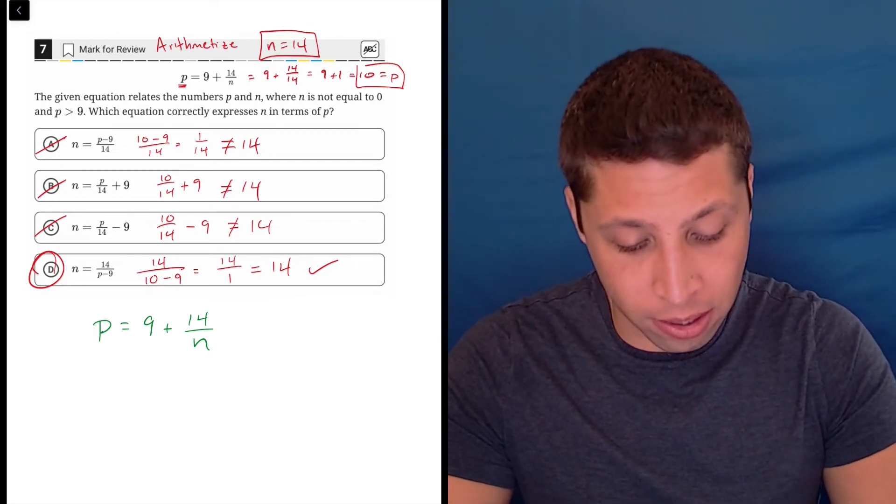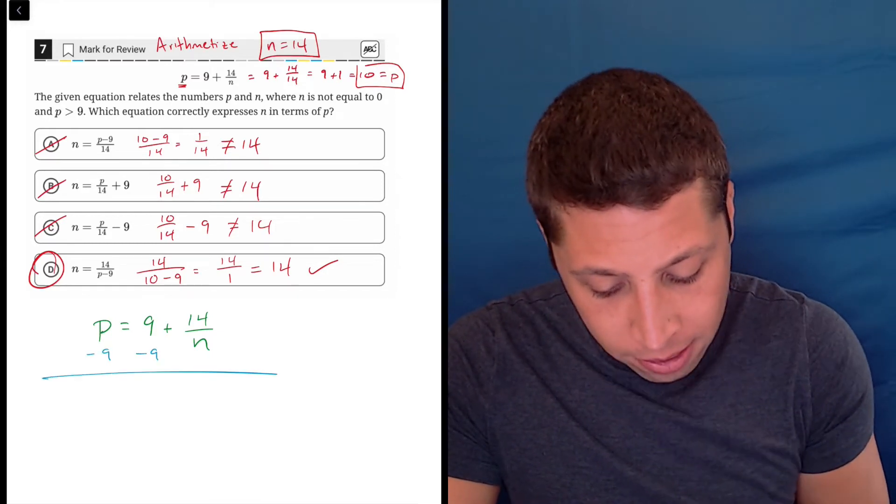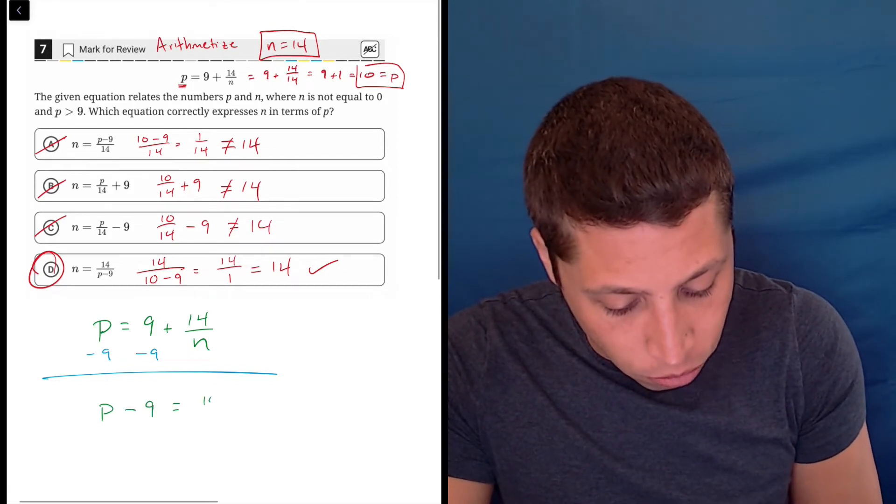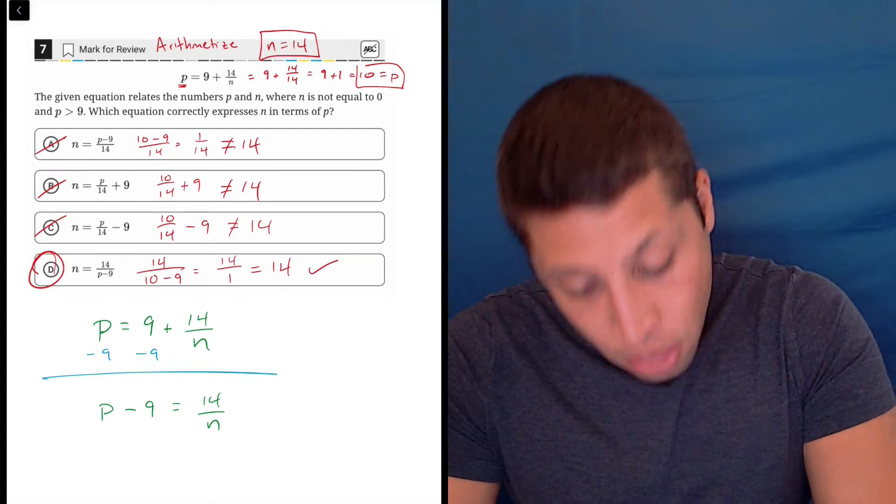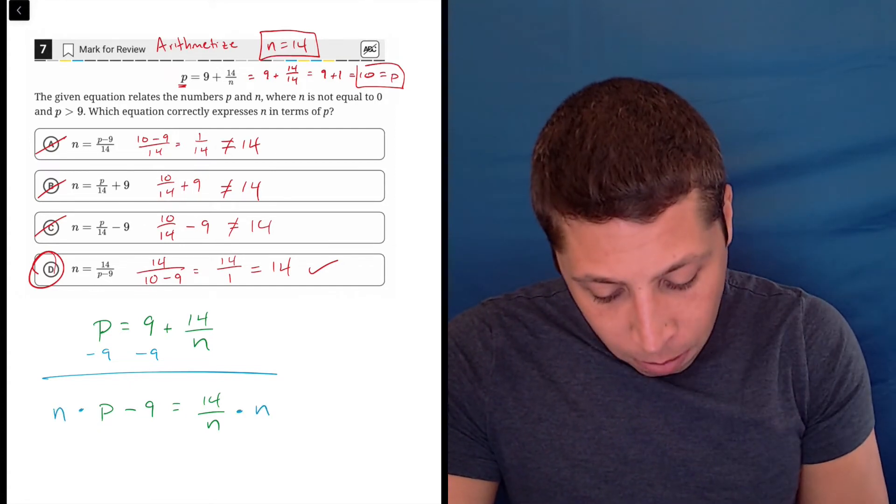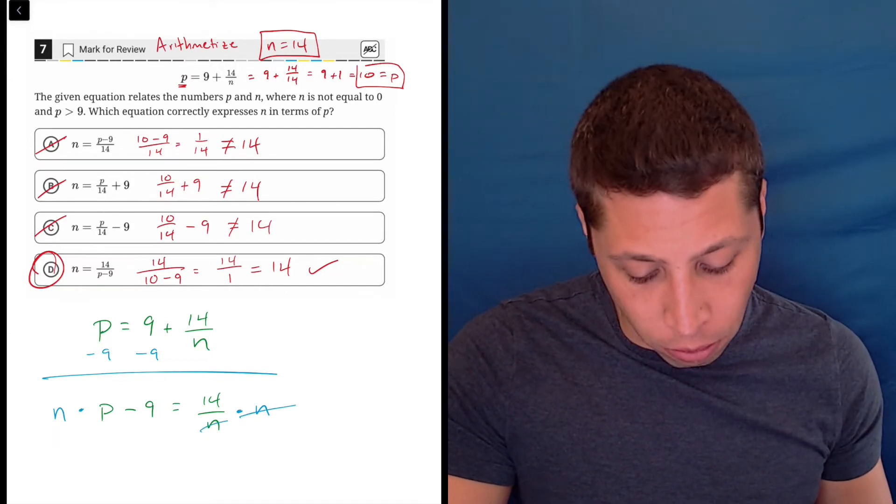If you want to know how to do the algebra, this is how it would go. We would start by subtracting the 9 from both sides. So that would leave us with p minus 9 equals 14 over n. Then, we want to get rid of fractions by multiplying. So we'd multiply by n on both sides. And when I do that, I have to be careful here. It's going to get rid of it on the right side.